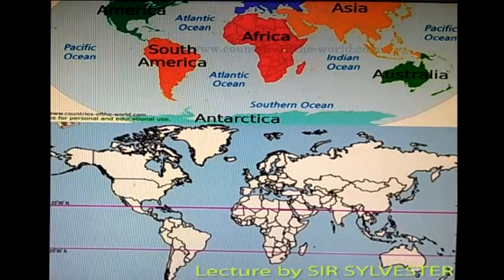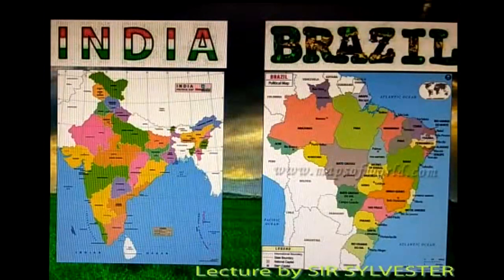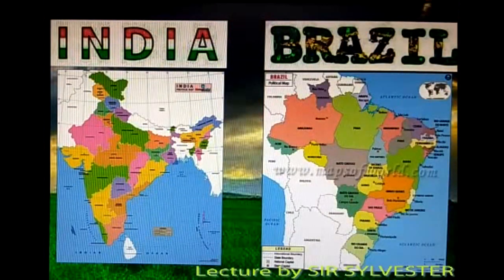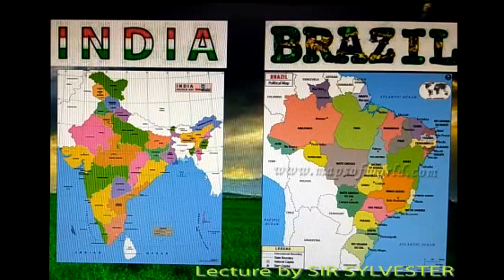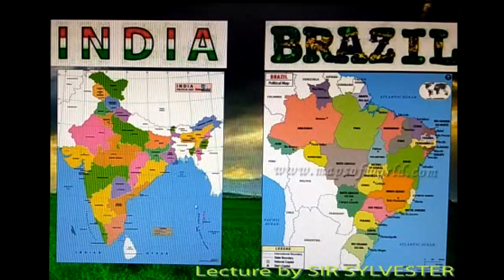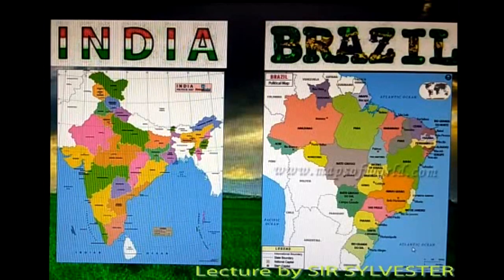Brazil comes in South America and India comes in Asia. These are the maps of both the countries. The capital of India is New Delhi and the capital of Brazil is Brasilia. Here we have the Indian Ocean, the Arabian Sea, and the Bay of Bengal. And here we have the North Atlantic Ocean and the South Atlantic Ocean.